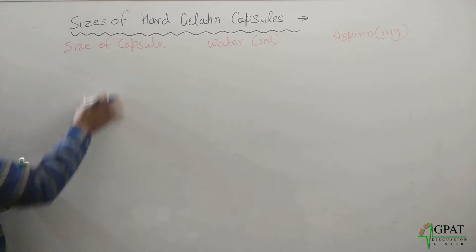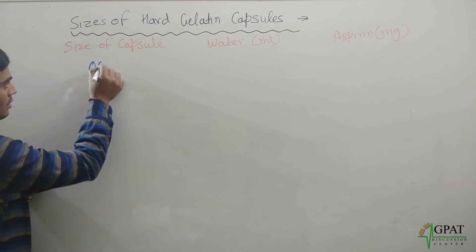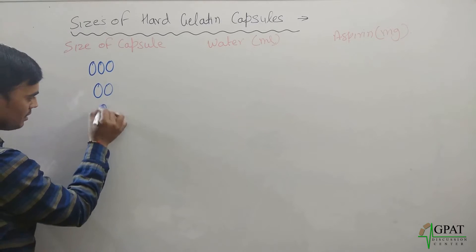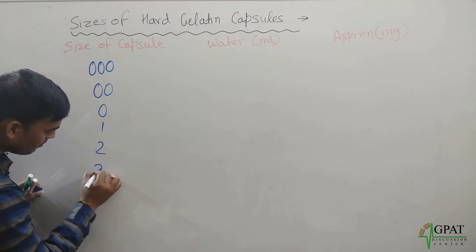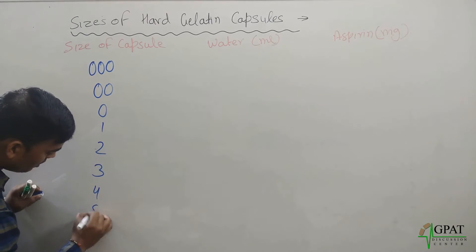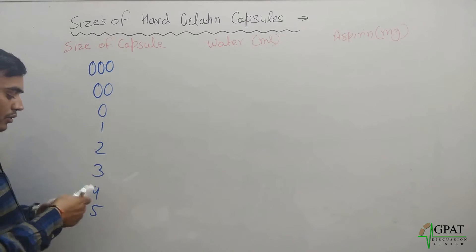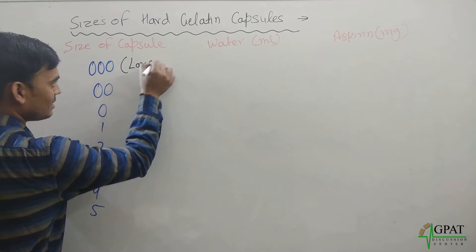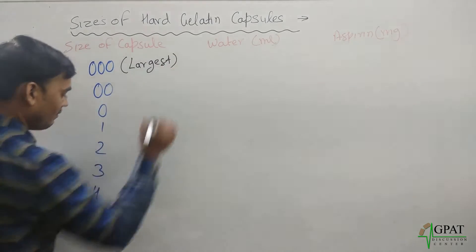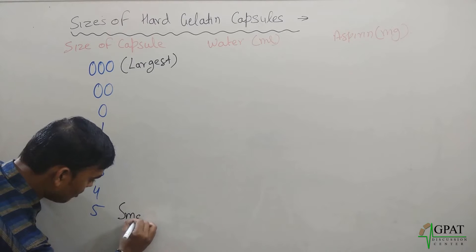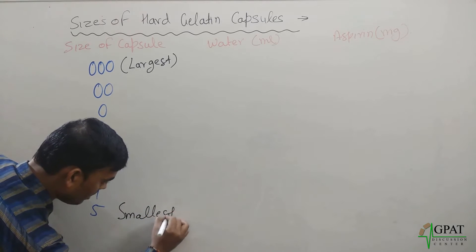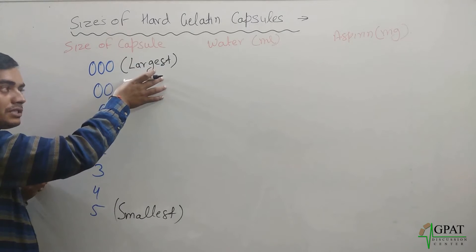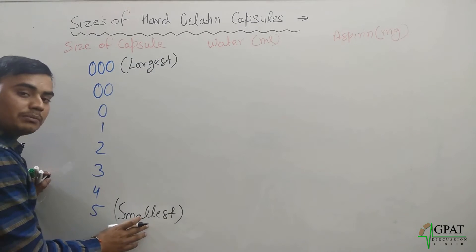The sizes of different capsules vary from triple zero, double zero, zero, one, two, three, four, and five. Triple zero is the largest in size, while size five is the smallest. Remember this very important point: triple zero is the largest, while the fifth number is the smallest.